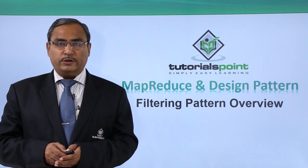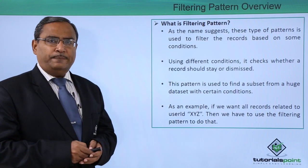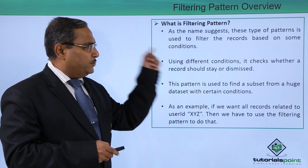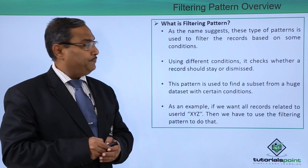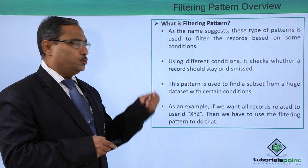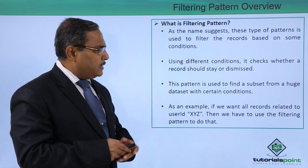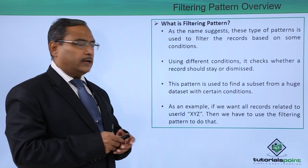So let us go for some more discussion on this topic. What is filtering pattern? As the name suggests, this type of pattern is used to filter records based on some conditions or criteria. Using different conditions, it checks whether a record should stay or be dismissed. This pattern is used to find a subset from a huge data set with certain conditions.